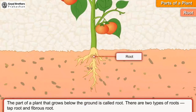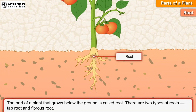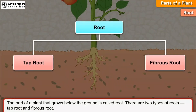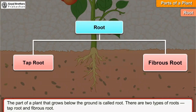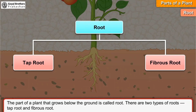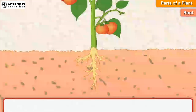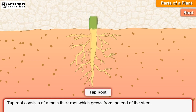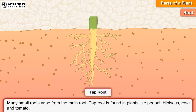Root: The part of a plant that grows below the ground is called root. There are two types of roots: taproot and fibrous root. Taproot consists of a main thick root which grows from the end of the stem. Many small roots arise from the main root.